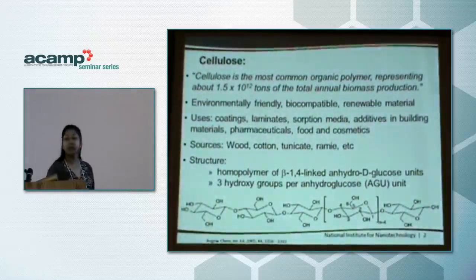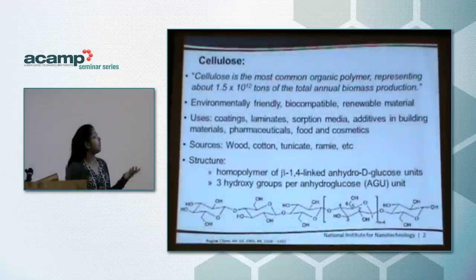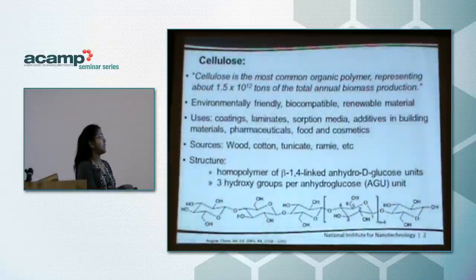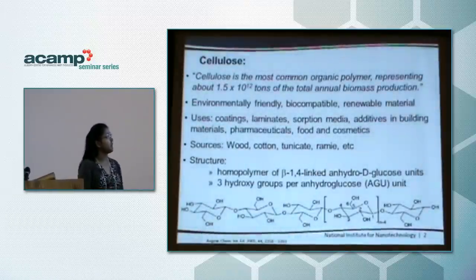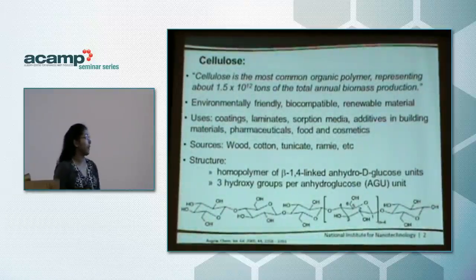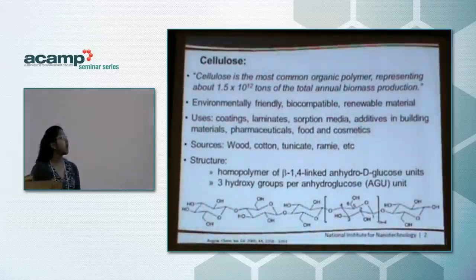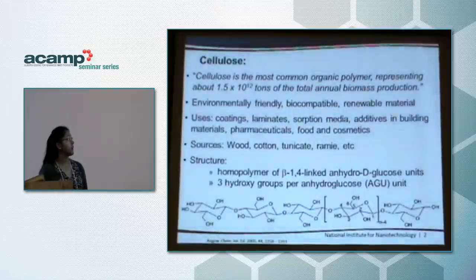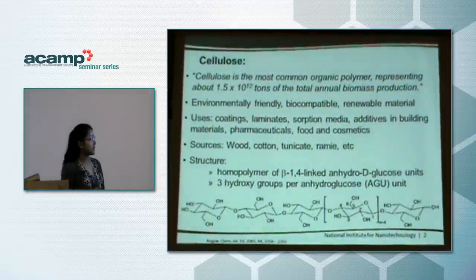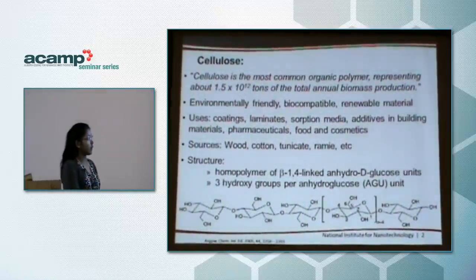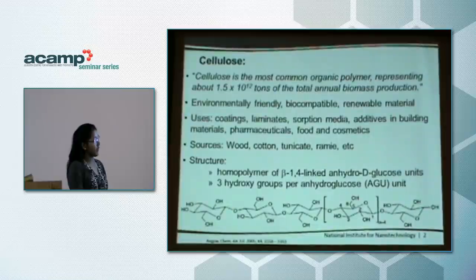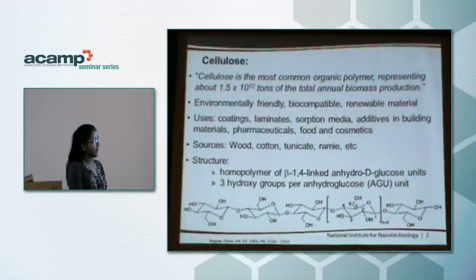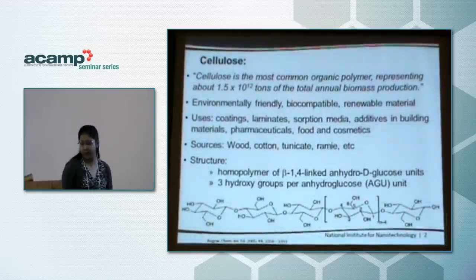The sources of cellulose include wood, cotton, tunicates, and ramie. The structure of cellulose is basically repeat units of glucose, and for each anhydroglucose unit you would be able to see three hydroxyl groups.